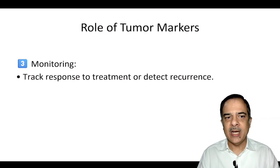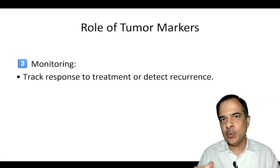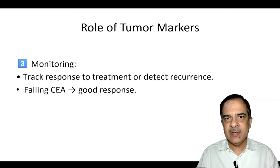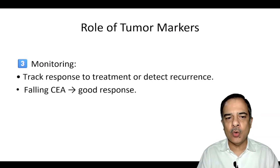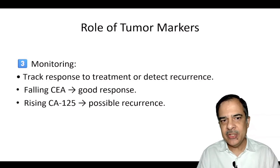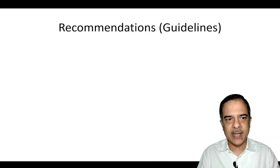The most important role is monitoring — tracking the response to treatment or detecting recurrence. For example, if CEA is falling after treatment, that means there is a good response, while a rising CA-125 indicates possible recurrence.